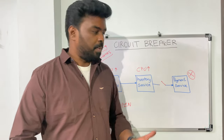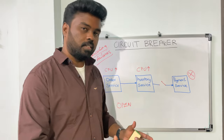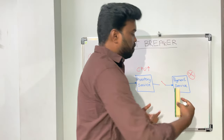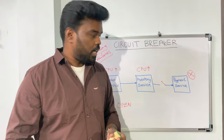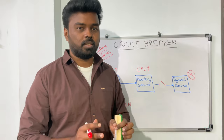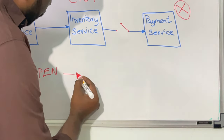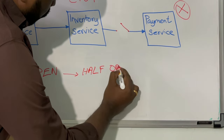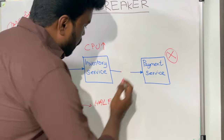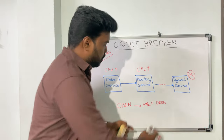After some time, the payment service might become available — someone might be fixing the issue, the service might be redeployed, or the server might have enough capacity to handle requests again. To identify whether the payment service has recovered, the inventory service, after some time, will send a very limited subset of requests to the payment service just to check whether it is healthy or not. This state is what we call half-open.